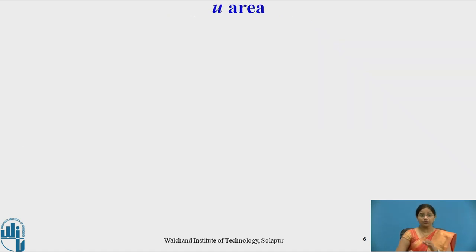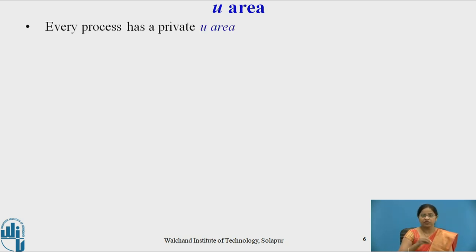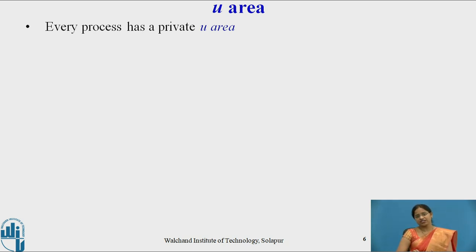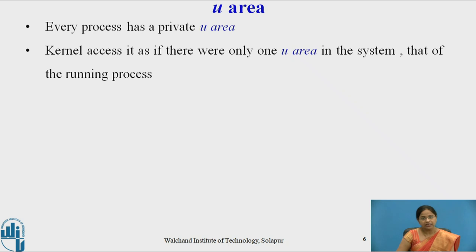Now let us see about the u-area. There is a virtual memory mapping from virtual address to physical address. Some systems create the virtual address the same as the physical address, so both addresses are identical — the conversion function for such systems is called an identical function. The u-area is one of the kernel data structures. Every process has its own private u-area. The kernel accesses it as if there were only one u-area in the system — that of the running process.